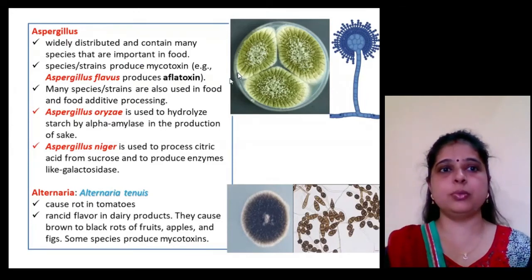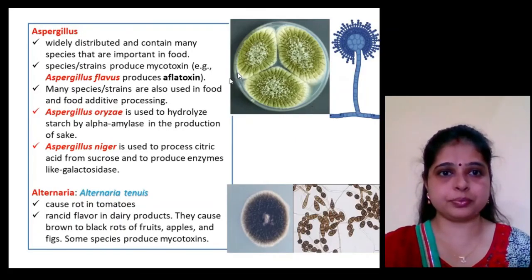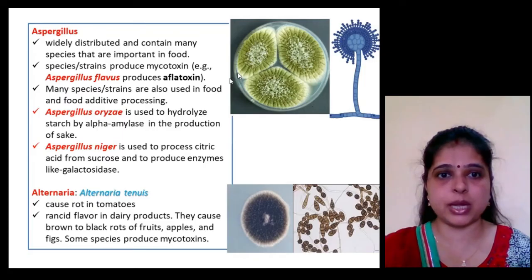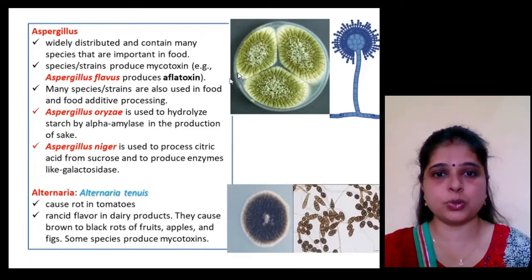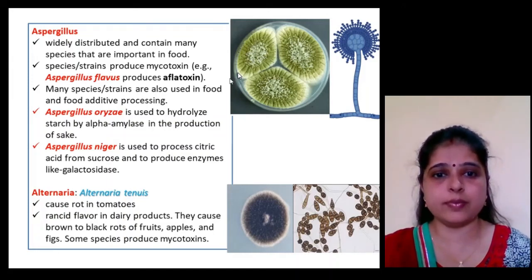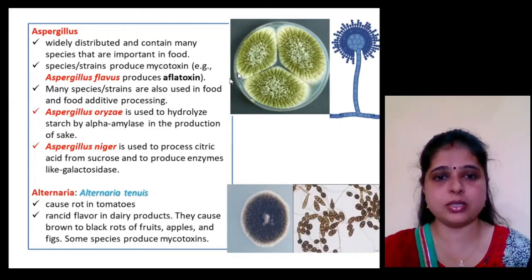Aspergillus is widely distributed. One species, Aspergillus flavus, causes aflatoxin production and is harmful. Aspergillus oryzae is used to hydrolyze starch via alpha-amylase in the production of sake. Aspergillus niger is used to process citric acid from sucrose and to produce enzymes like galactosidase. Alternaria tenuis causes rotting in tomatoes and gives a rancid flavor to dairy products.